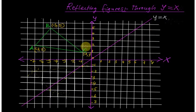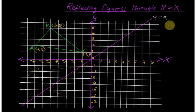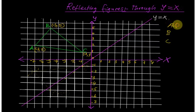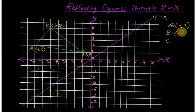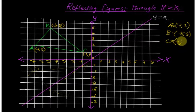We are reflecting this figure through the line y equal to x. The coordinates of the object are: A is negative 7 comma 2, B is negative 5 comma 5, and C is negative 1 comma 1.